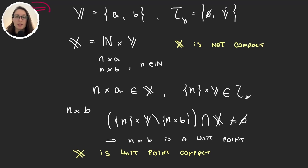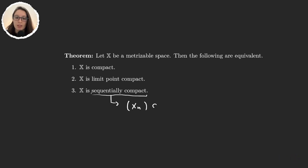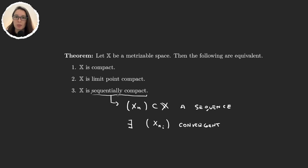Let's finish this video with a last theorem that gives us a characterization of compactness in metric spaces. This theorem tells us that whenever we are in a metrizable space — that is, X is a topological space whose topology can be induced by a metric — compactness, limit point compactness, and sequential compactness are all equivalent. A space is sequentially compact if any time we take a sequence in the space there exists a subsequence that is convergent. In metric or metrizable spaces, that definition is the same as saying the space is compact or limit point compact.